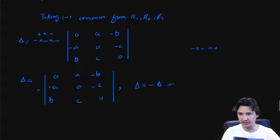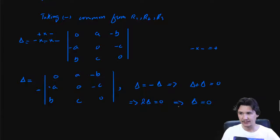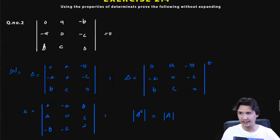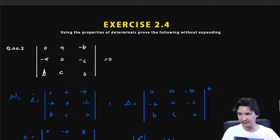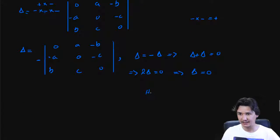Bringing delta to the other side, delta plus delta equals two delta, which equals zero. Dividing both sides by two gives delta equals zero. Since we supposed that delta equals that determinant, the complete determinant is equal to zero, which is the required result.